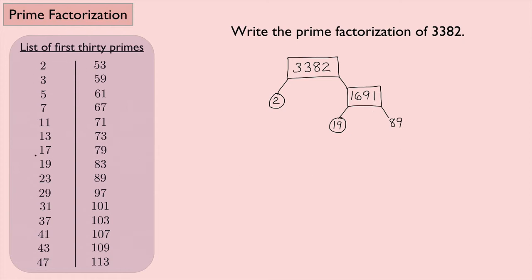And 19 times 89 is 1,691. Now, if you look at the chart over here of the first 30 primes, 89 is also prime. So we're done. That's it.